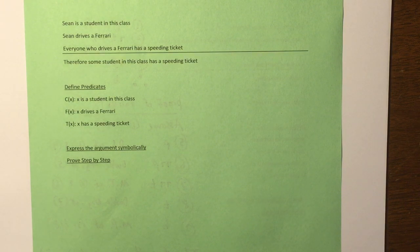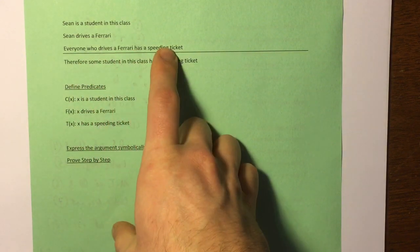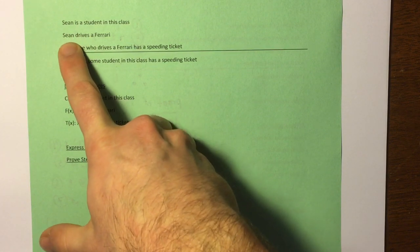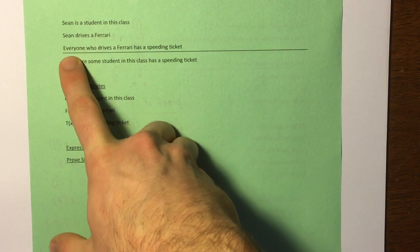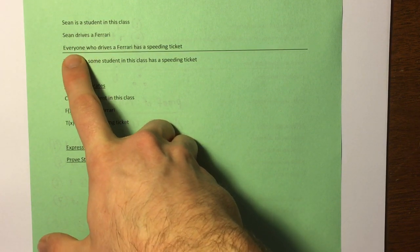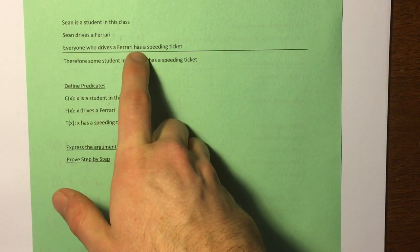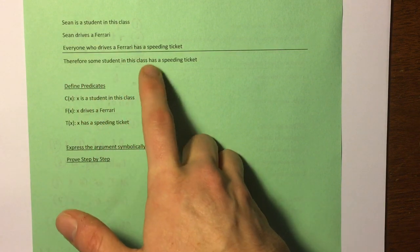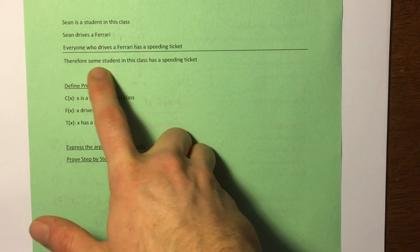It says here: Sean is a student in this class. Sean drives a Ferrari, and then everyone who drives a Ferrari has a speeding ticket. The inclusion of the word 'everyone' — we've stepped away from talking about Sean or any particular person to just everyone. That is a for-all quantifier right there, so we're talking about a quantifier with predicates. And therefore, some student in this class has a speeding ticket — so 'some student' is a there-exists quantifier.